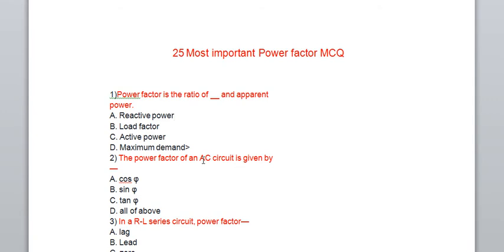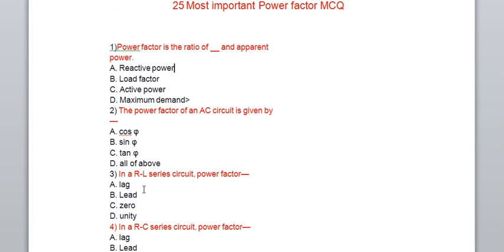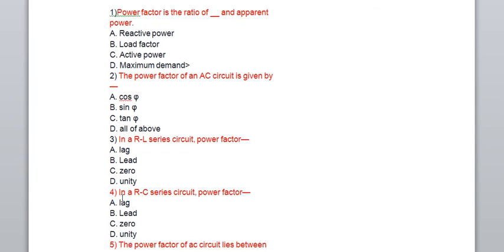In RL series circuit, the power factor is lagging. RL series circuit means inductive nature, means current is lagging, so the power factor is lagging. In RC series circuit, the power factor is leading. Current leads in RC series circuit, so the power factor is leading.